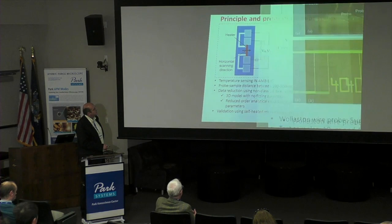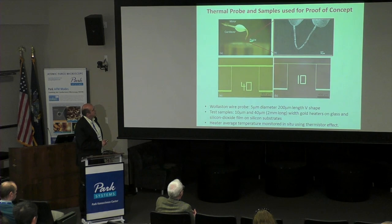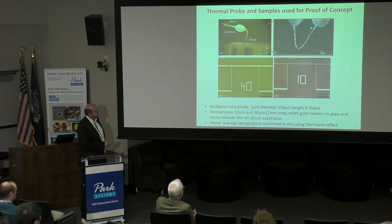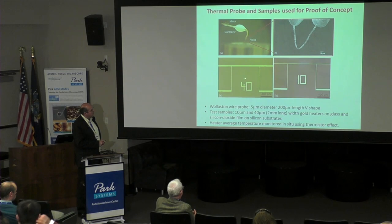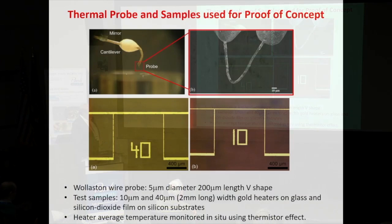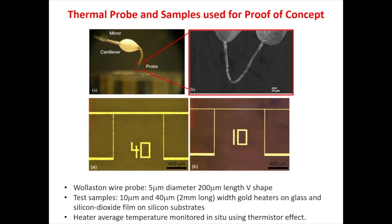This is the Wollaston probe — this is the entire probe, and this is an SEM image of the actual tip used in measurements. This is about 200 micron length; the wire diameter is about 5 microns. With this type of probe, we do experiments on micro heaters ranging between 10 micron and 40 micron width. These micro heaters are instrumented with four-probe electrical resistance measurements, so we can measure very well the average temperature of the micro heater in this region.